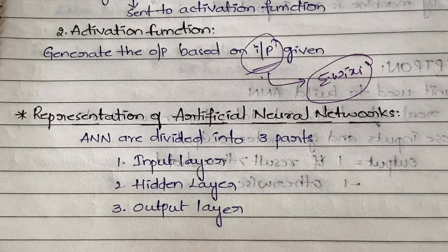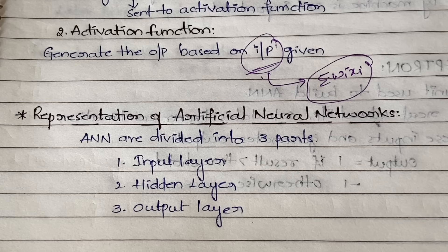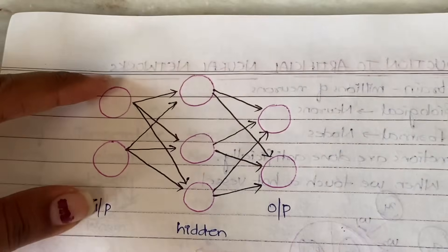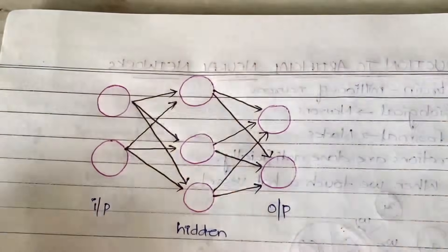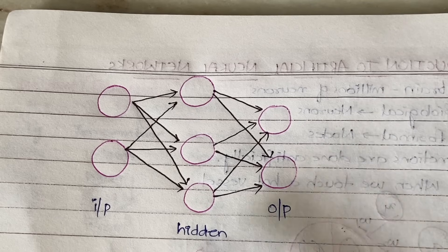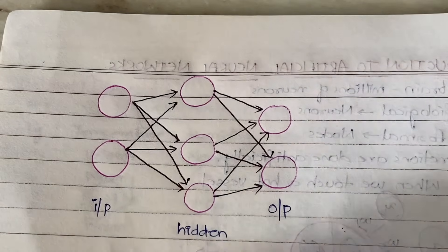Now let us see the representation of artificial neural networks. Artificial neural networks are divided into three parts: one is the input layer, two is the hidden layer, and three is the output layer. Looking at the diagram, you can see the input layer, the hidden layer, and the output layer. You can have any number of nodes in each layer — it's not fixed to two or three — it depends on the input you are taking.